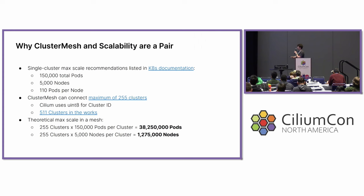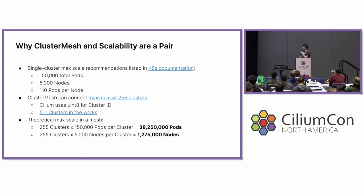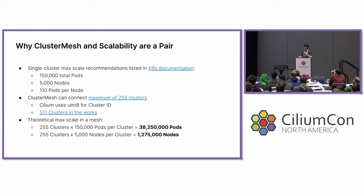One of the biggest things about Cluster Mesh is the aspect of scalability, because Cluster Mesh allows you to scale your environment beyond single cluster max scale recommendations. If we look at the scale recommendations provided by Kubernetes, we see 150,000 total pods as well as 5,000 nodes per cluster as a maximum. But Cluster Mesh can allow you to connect up to 255 clusters. So theoretically you could have 38 million pods and 1.2 million nodes in your environment all connected together — and we'll talk about why this is very theoretical here in a second.